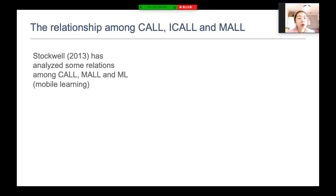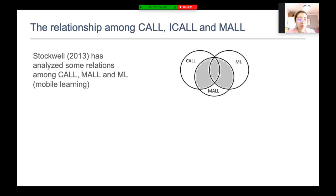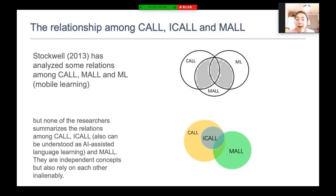Let's review some relationships among CALL, ICALL, and MALL. In this graphic, we can see that CALL has some overlap with MALL, and MALL also has overlap with ML — mobile learning. However, none of the researchers have summarized the relations among CALL, ICALL — also understood as AI-assisted language learning — and MALL. They are independent concepts but also rely on each other. ICALL does belong to CALL and also has overlap in some parts with MALL.